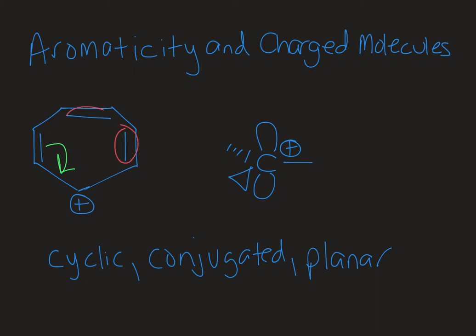So I have one, two, three pi bonds in this molecule, and each of those pi bonds is going to have two electrons, so that's six total electrons.